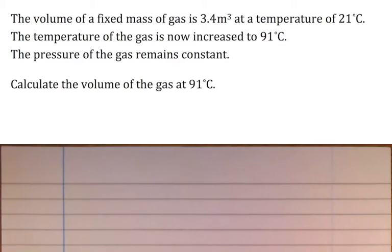So it says, the volume of a fixed mass of gas is 3.4 metres cubed at a temperature of 21 degrees Celsius. The temperature of the gas is now increased to 91 degrees Celsius, and the pressure of the gas remains constant. Calculate the volume of the gas at 91 degrees Celsius.